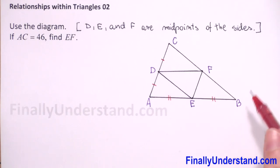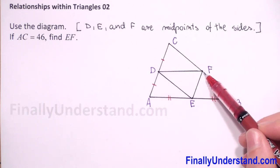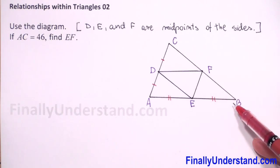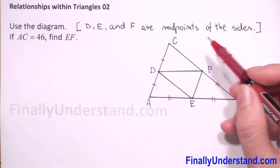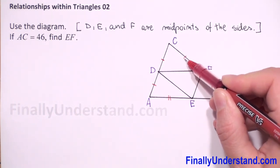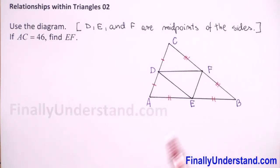So we can write two marks, and because F is the midpoint of BC, it means that BF is congruent to CF. So we have given that D, E, F are the midpoints of the sides.